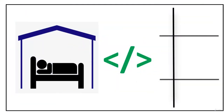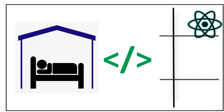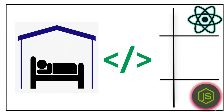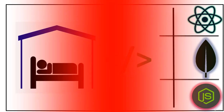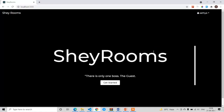Hello guys, welcome to the course — Hotel Booking Application in MERN stack. In this course we are going to use React as our front-end, Node.js as our back-end, and MongoDB as our database. We are going to build this full-stack hotel booking application without Redux, meaning without a state management tool. My name is Satya and I will be the instructor of this course. Without any delay, let's see the demo of our project.